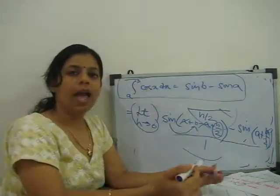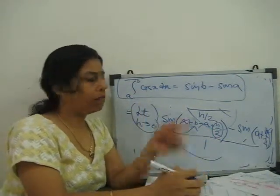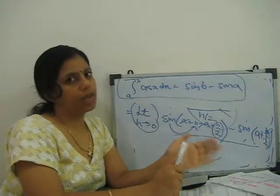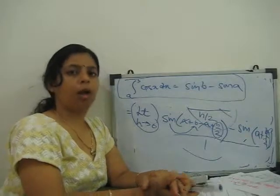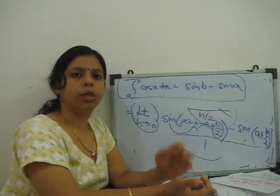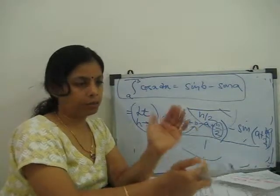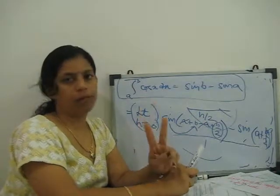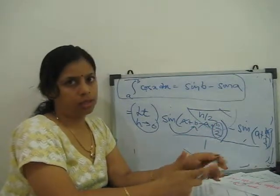So the complete solution: integral from a to b of cos(x) dx equals sin(b) − sin(a). You get the same result whether you solve it as a definite integral or as a limit of sum. For trigonometric summations, use the sin(A±B) or cos(A±B) formulas, simplify by substituting r = 1, 2, 3 — all middle terms cancel — then apply the limit to get the solution.